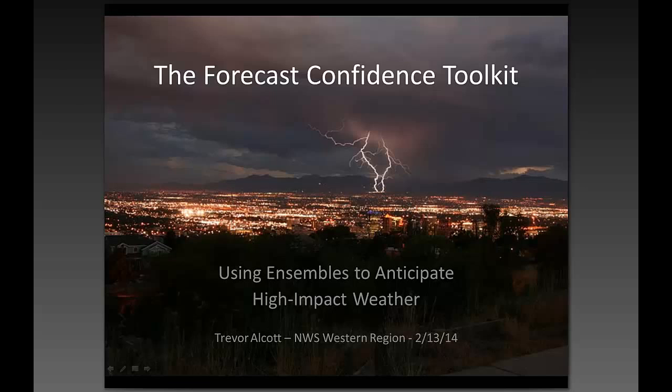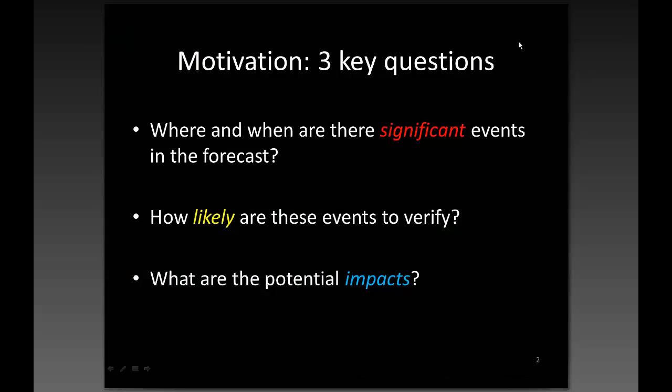What I'm going to be presenting today is something we've been working on for two or three years now, just to really improve the way that forecasters are using probabilistic information. What's really driving this effort is three main questions: we want forecasters to be able to better answer where and when are there significant events in the forecast, how likely are these events to verify, and what are the potential impacts. This really goes back to the whole DSS effort because if you want to do good DSS, you still need to have good forecast information, and we're trying to make sure we are supplying forecasters with good science.